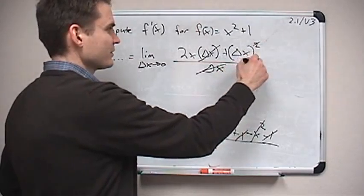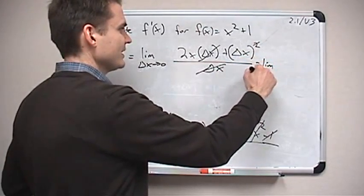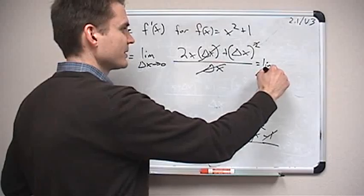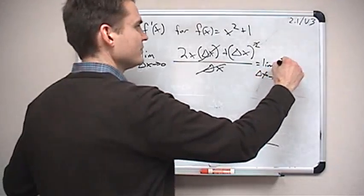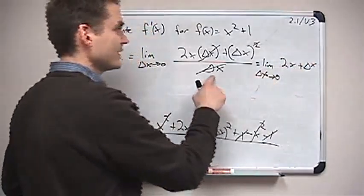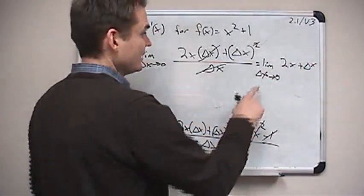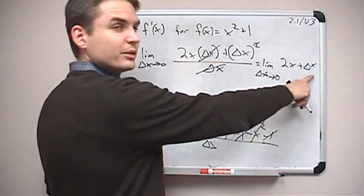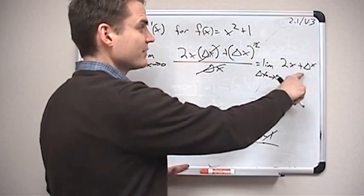So finally what I get is the limit as delta x approaches 0 of 2x plus delta x. The denominator's been canceled. Of course, now there's no problem at all replacing delta x with 0.